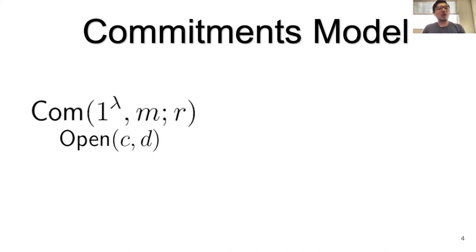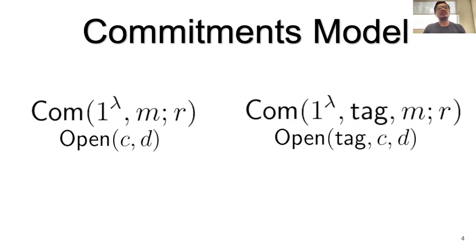Now let me describe the commitment model for this work. We focus on the non-interactive setting, meaning the commit and open protocols are algorithms — they simply output the commit string and message respectively. Additionally, we use the tag model of computation, where commit and open algorithms take an extra tag. These tags are public values that any party can choose independently and post publicly.